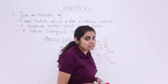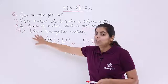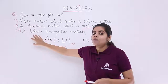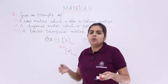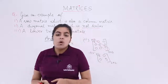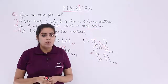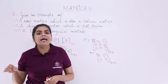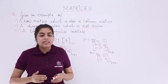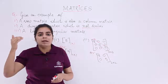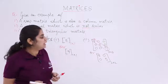Let's move to the last and final part. The final part expects me to give an example of a lower triangular matrix. A lower triangular matrix is one where, if you mark the diagonal elements, all elements above the diagonal are 0 and the lower elements can be non-zero. Let's quote an example.